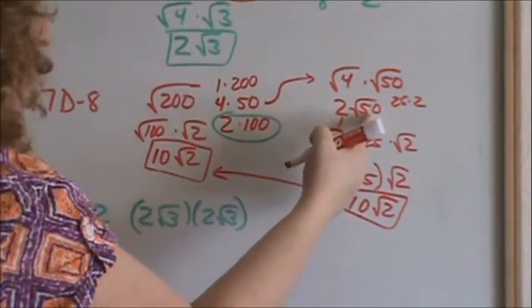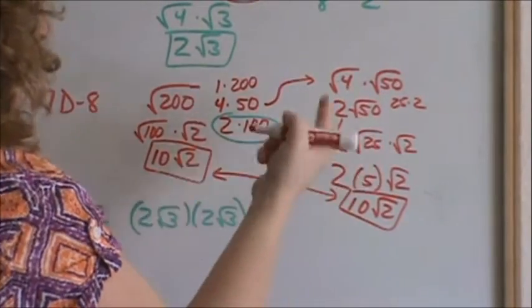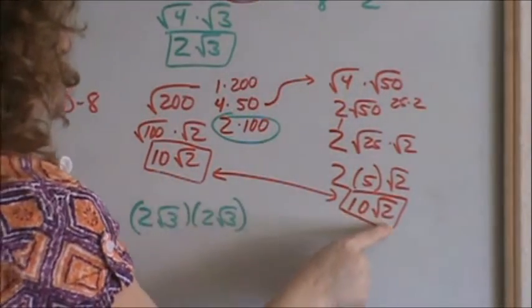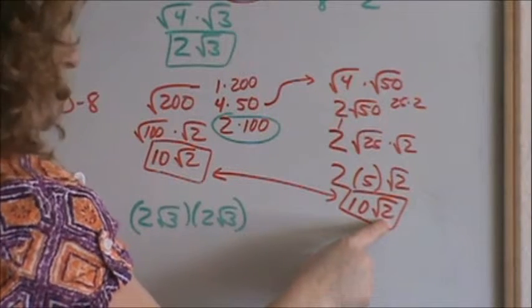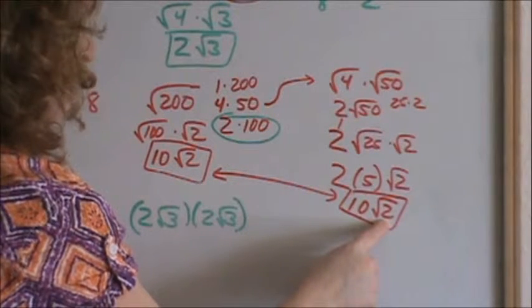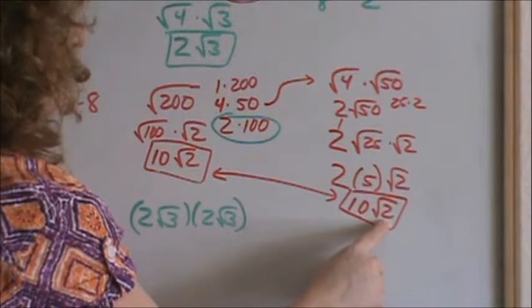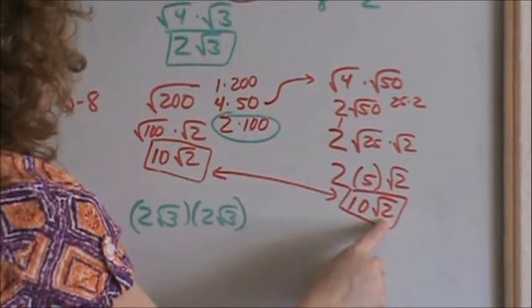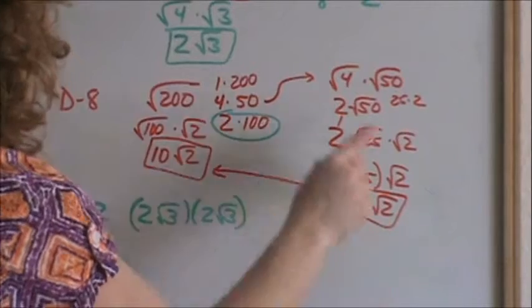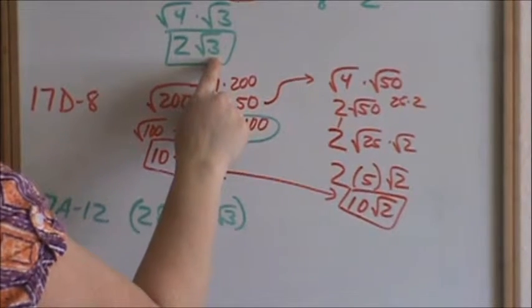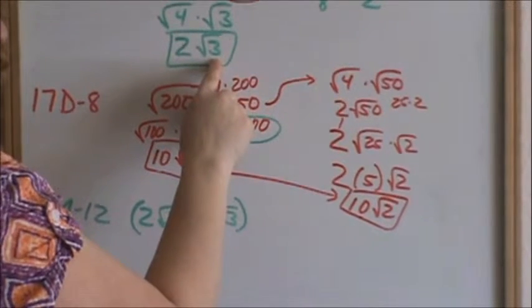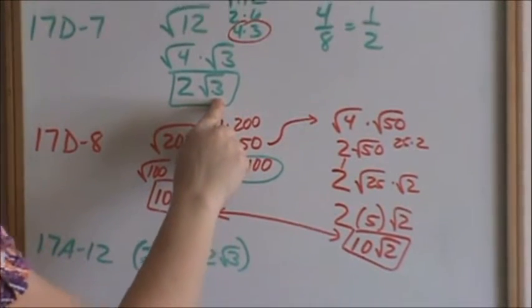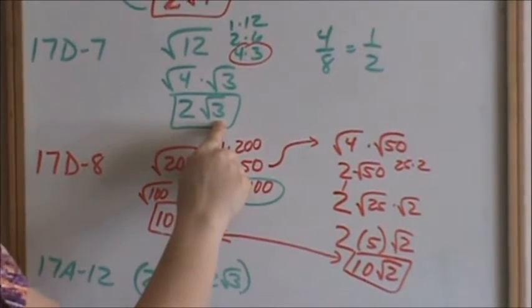If you pick factors that can continue to keep simplifying, just keep simplifying your radical until you cannot simplify it anymore. Square root of 2 — the only factors of 2 are 2 times 1, neither one of those are a perfect square, so square root of 2 cannot simplify anymore. Just as with square root of 3, the only factors of 3 are 3 times 1, neither one of those are a perfect square, so square root of 3 cannot simplify anymore.